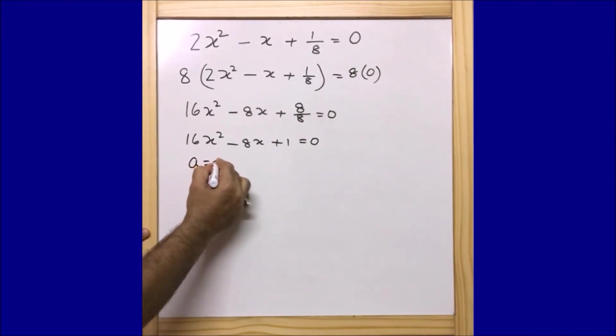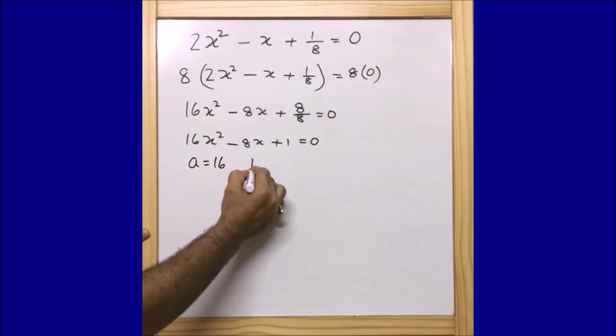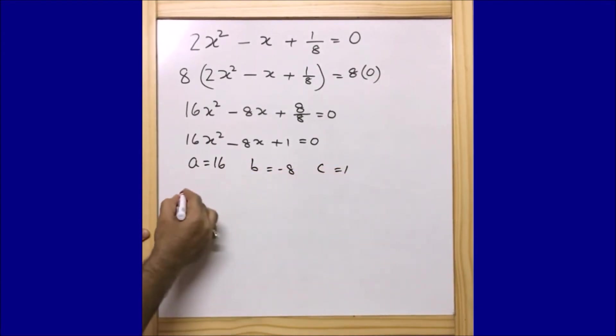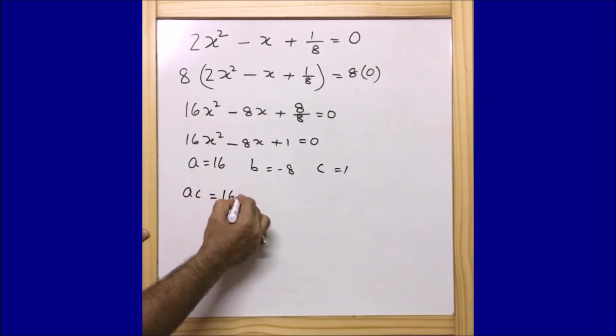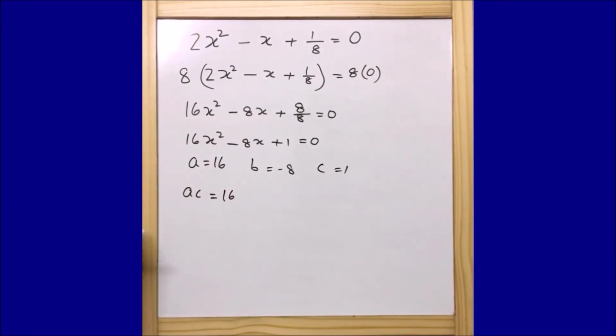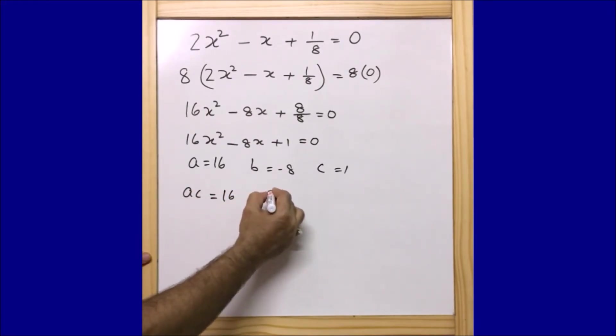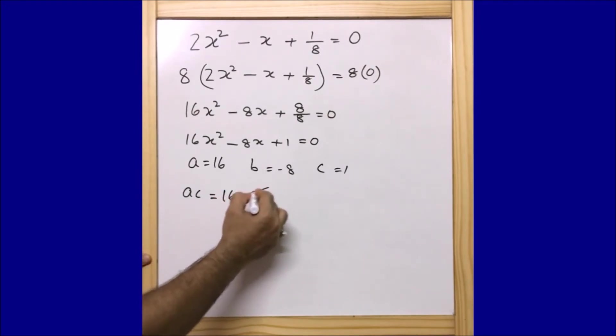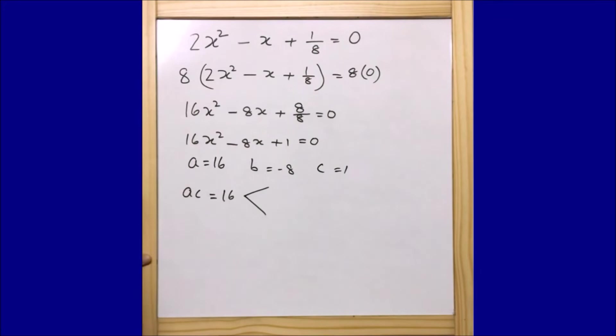So here a = 16, b = -8, and c = 1, and ac is nothing but 16 × 1, that is 16. Now our main goal would be to find two numbers whose addition will give us -8 and multiplication will give us 16.